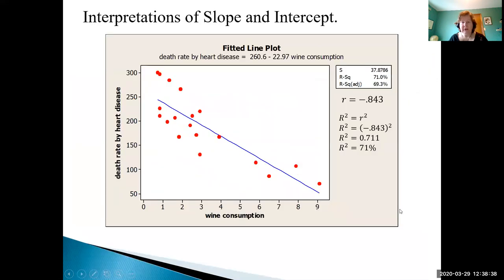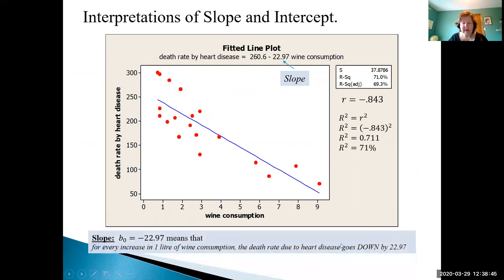Let's take a look at interpreting the slope. The slope says -22.97. Our slope of -22.97 means that for every increase in one liter of wine consumption, the death rate due to heart disease goes down, because it's negative, by 22.97.